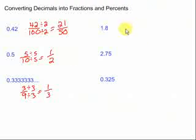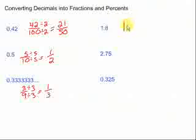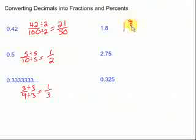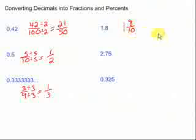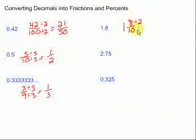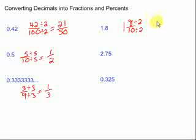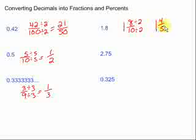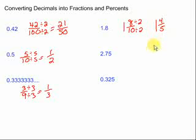Let's look at this one, 1.8. Okay, well, we'll take that whole number and put it out front. That's going to be our whole number in our mixed number. And then we have the 0.8. 0.8 is correctly read as 8 tenths. So we have 8 over 10. We can simplify that, of course, by dividing by 2, top and bottom. 8 divided by 2 is 4. 10 divided by 2 is 5. 1 and 4 fifths.